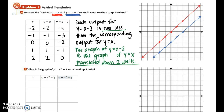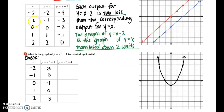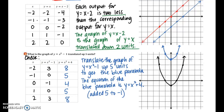In part b, we deal with a parabola instead of a line. Using the same input values, I found the output values for y equals x squared minus 1 and plotted those points. We then translate each point up 5 units by counting up 5 from the current points. The blue parabola drawn above the original is the graph translated up 5 units. The equation of the blue parabola is y equals x squared plus 4, because the original y-intercept of negative 1 was translated up 5 units to positive 4. Substituting into the new equation confirms that every value is 5 greater than the corresponding value in the original.